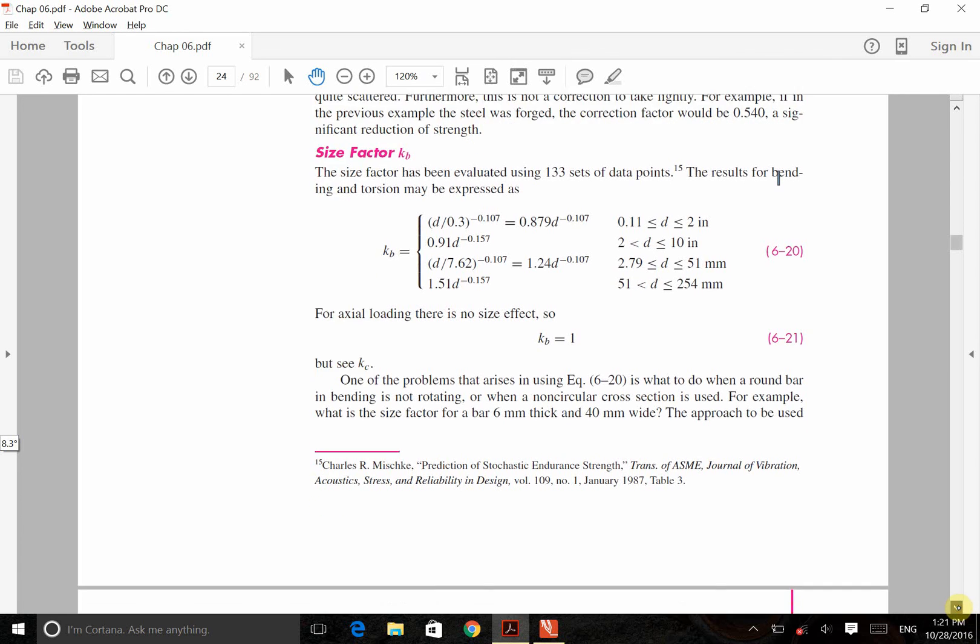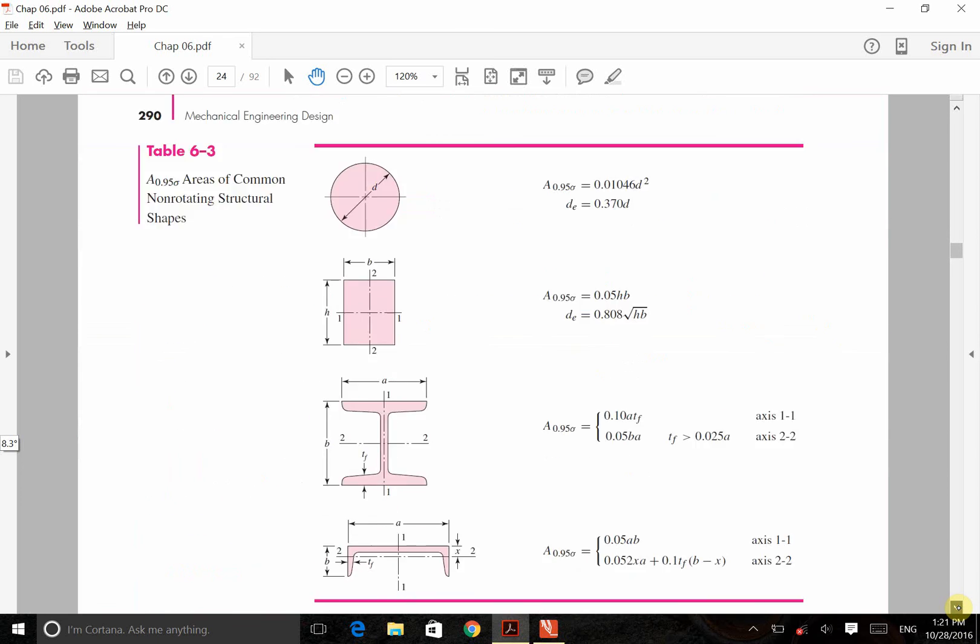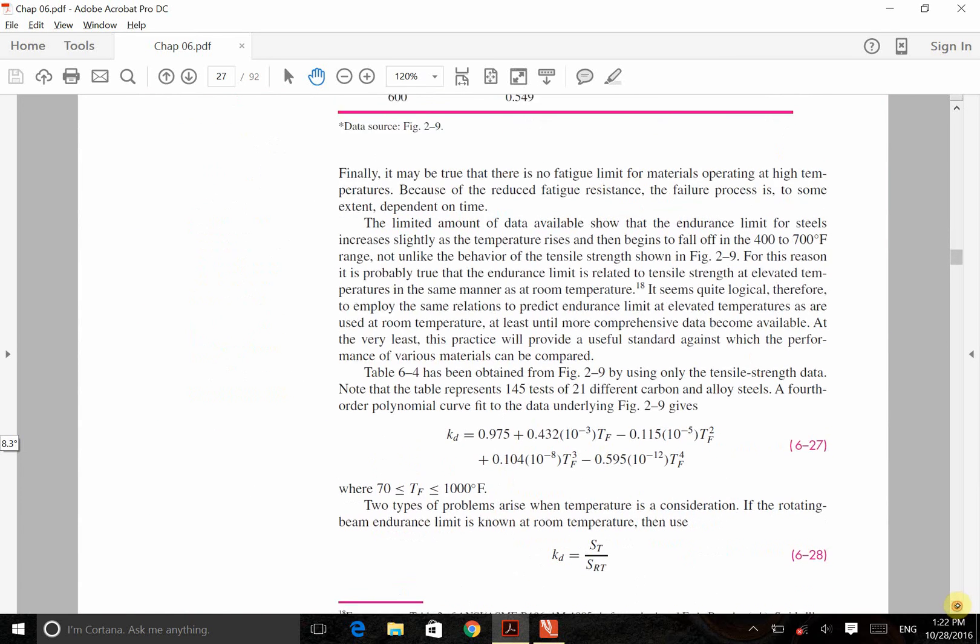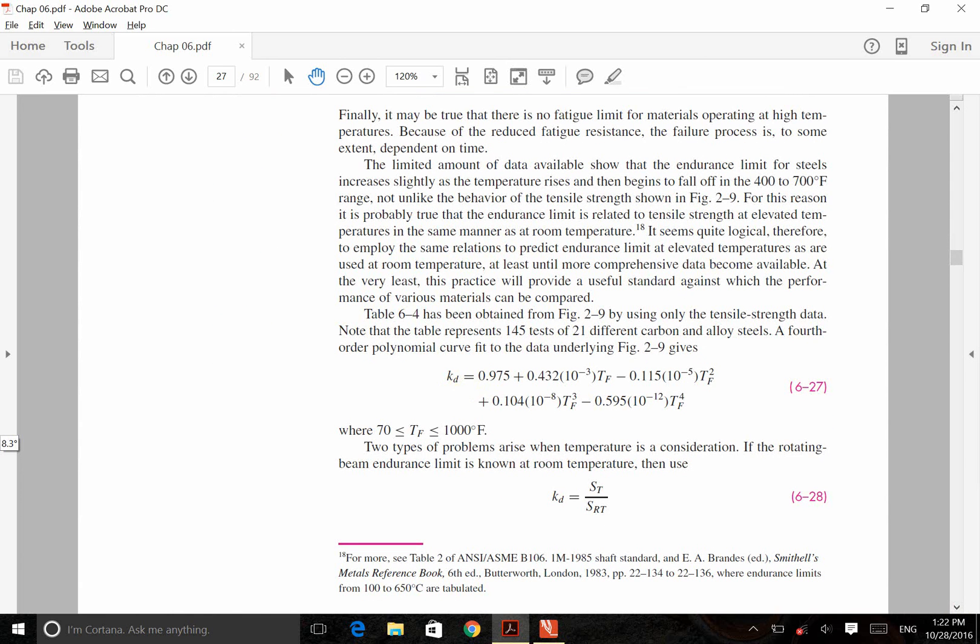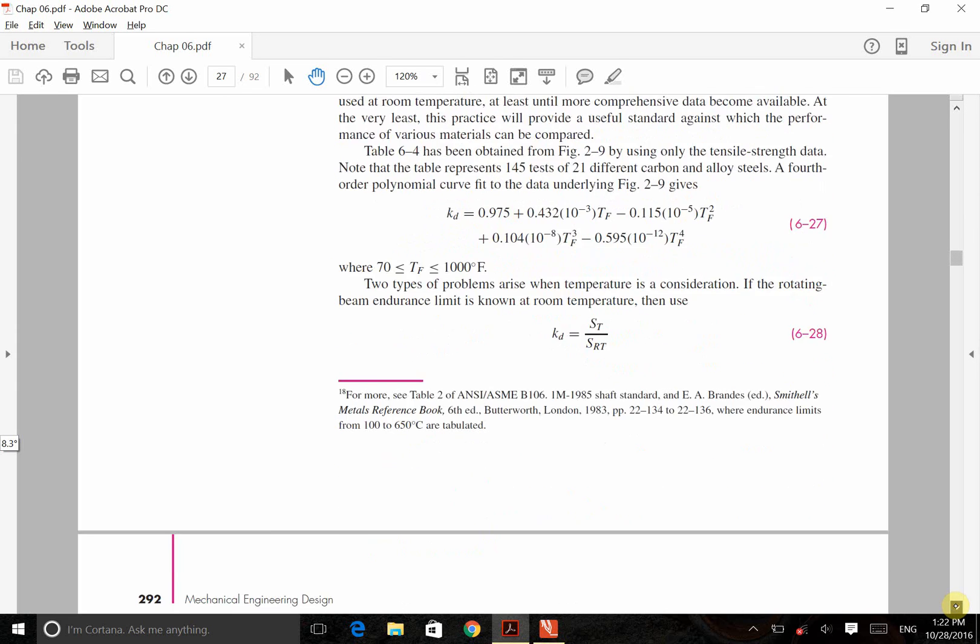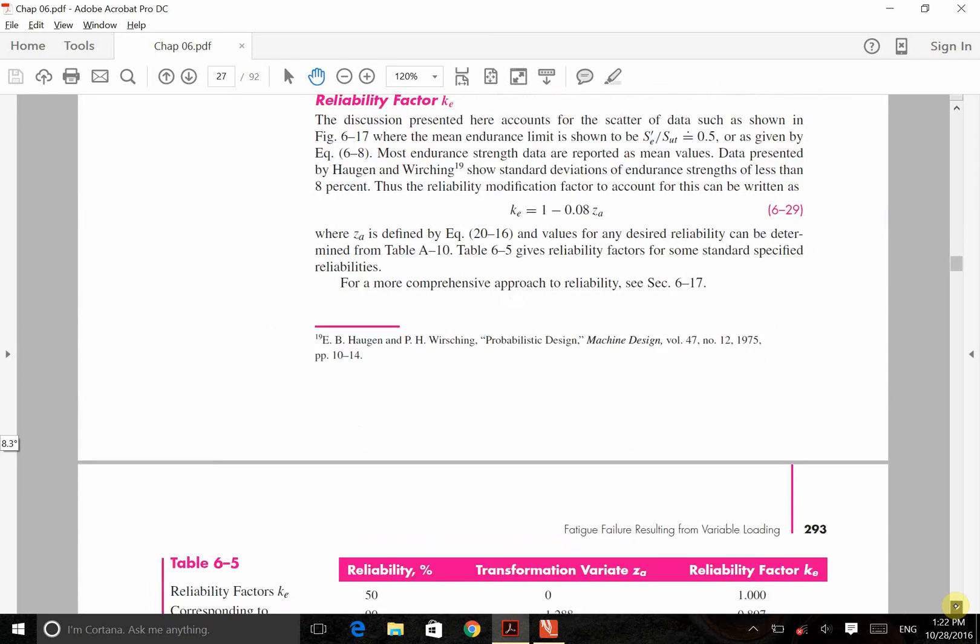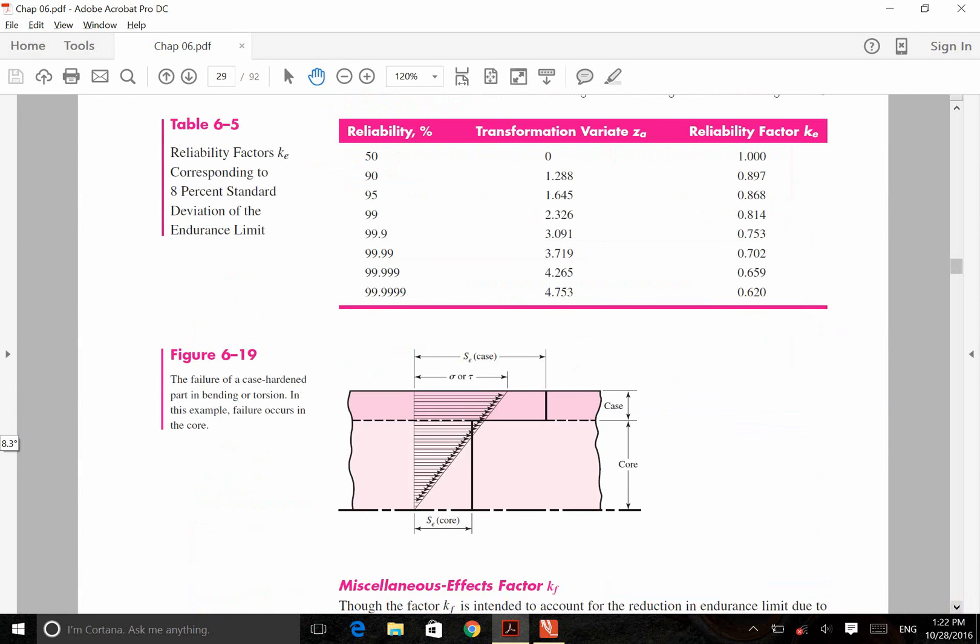And I can show you the table for KE before I finish this video. So that was the equation for KD, temperature factor. We put temperature here, and we find KD based on that one. You see there is no other parameters here. And this is an equation for KE based on reliability percentage. So, for example, if reliability is 95%, we need to use this number as our KE. If reliability is 50%, KE is 1.